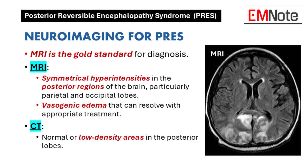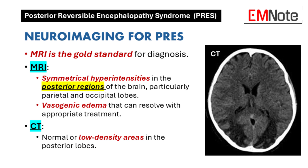MRI is the gold standard for diagnosing PRES. The typical MRI findings include symmetrical hyperintensities in the posterior regions of the brain, particularly affecting the parietal and occipital lobes, and vasogenic edema that is reversible, meaning that it can resolve with appropriate treatment. CT scans may also be performed initially, but they are often normal or show low-density areas in the posterior lobes.